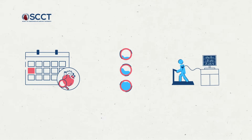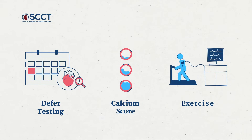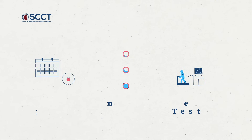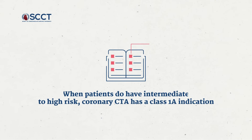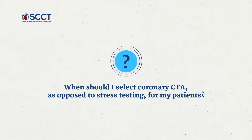For a low risk patient, the guideline provides an option to defer testing or to consider a calcium score or an exercise treadmill test, both of these having a class 2A indication. When patients do have intermediate to high risk, a coronary CTA has a class 1A indication, but certainly other tests can also be performed. So the question for clinicians is often: when should I select coronary CTA as opposed to stress testing for my patients?